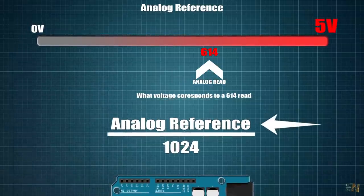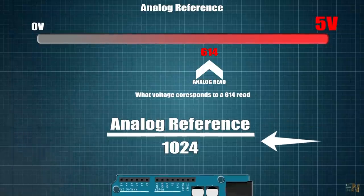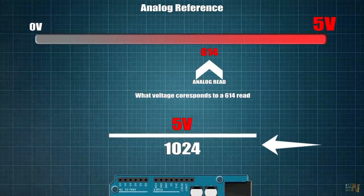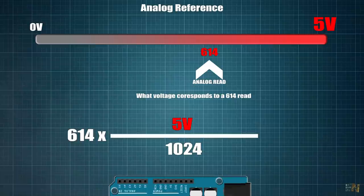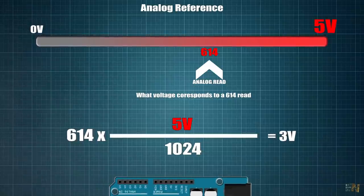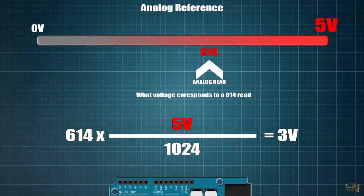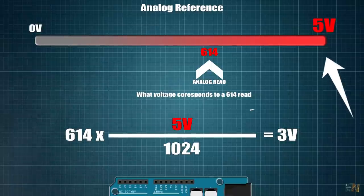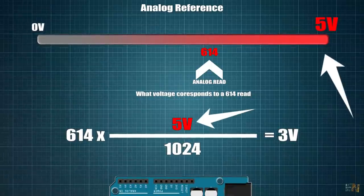Well what we usually do in the code to pass from digital values to voltage values is to divide the analog reference voltage by the maximum digital value which is 1024. Then we multiply that value by the analog read which was 614 and we get a read of 3V. This process implies that the reference voltage is 5V.